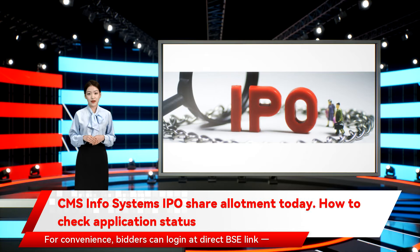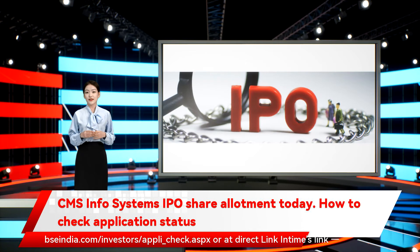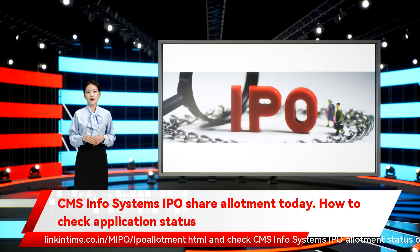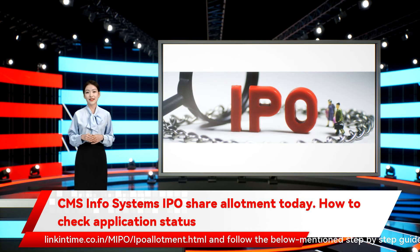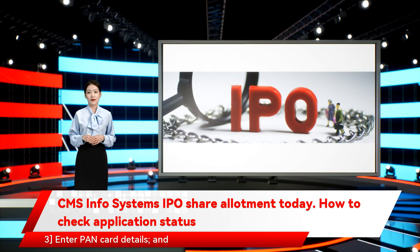For convenience, bidders can log in at the direct BSE link, bseindia.com/investors/appli_check.aspx, or at the direct Link Intime link, linkintime.co.in/mipo/ipoallotment.html, and check CMS InfoSystems IPO allotment status online. They can log in at that Link Intime link and follow the below-mentioned step-by-step guide.